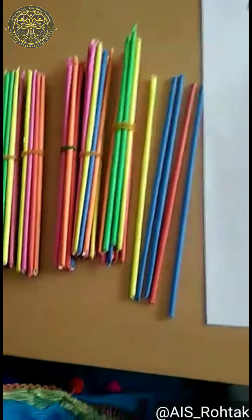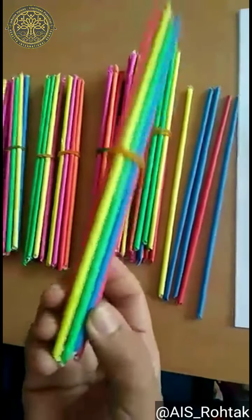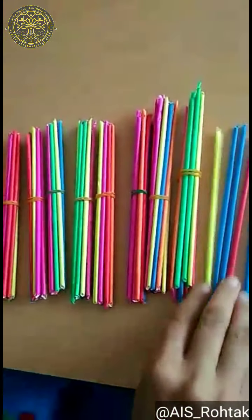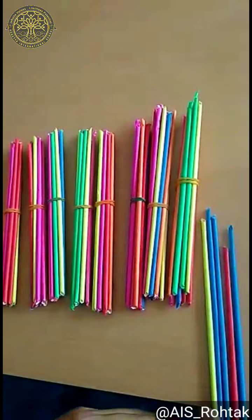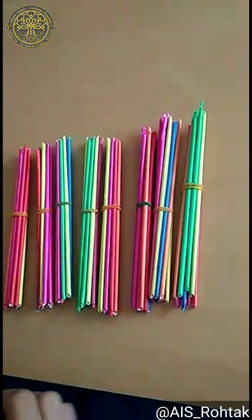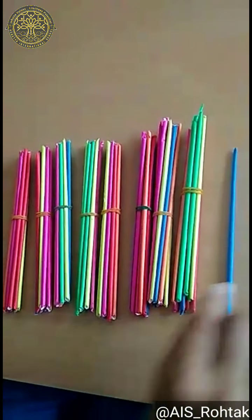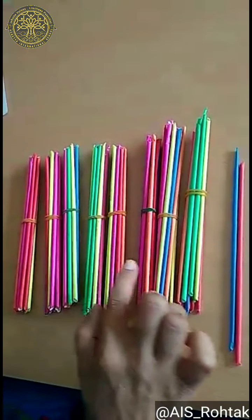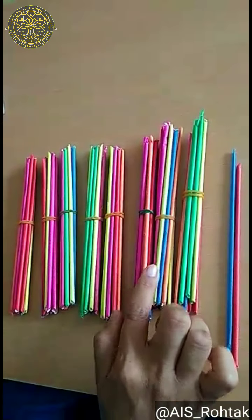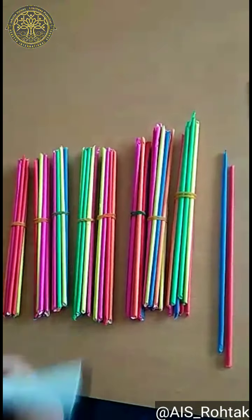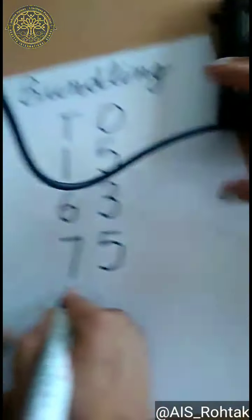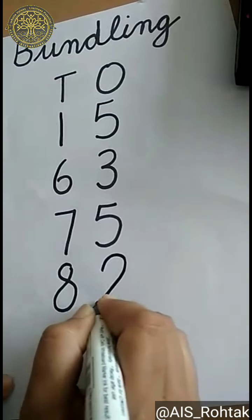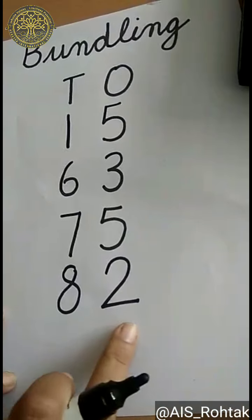Now I am adding 1 more ten. Now add some loose sticks. How many loose sticks? 1 and 2. So 8 tens and 2 ones becomes 82.